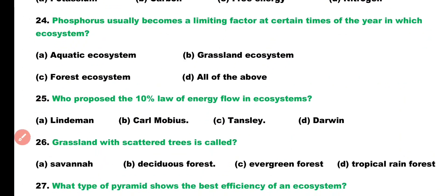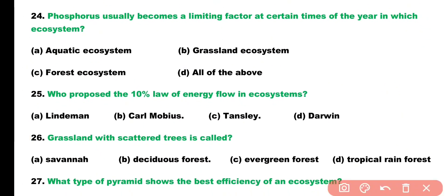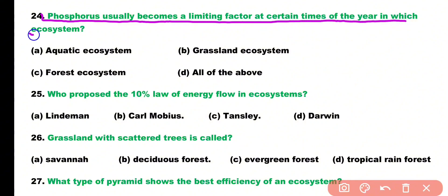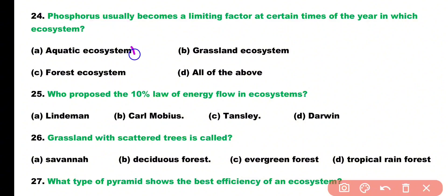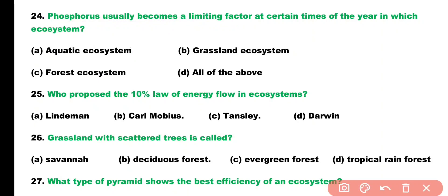Question number twenty-four. Phosphorus usually becomes a limiting factor at certain times of the year in which ecosystem? Options: aquatic ecosystem, grassland ecosystem, forest ecosystem, or all of the above? Correct answer is option A. In an aquatic ecosystem, phosphorus usually becomes a limiting factor at certain times of the year.